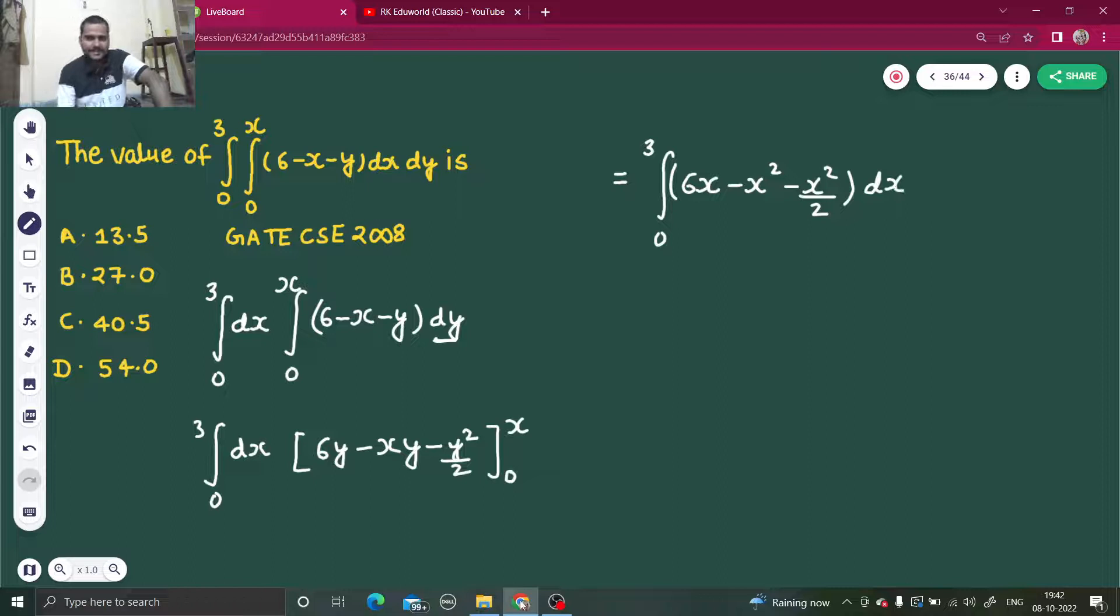Finally, this integration. So integration of 6x is 6x squared by 2, which gives you 3x squared. Integration of x squared is x cubed by 3. Integration of again x squared is x cubed by 3; 2 is already there. And it goes from 0 to 3.